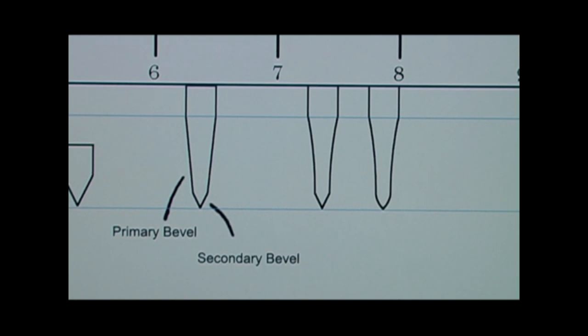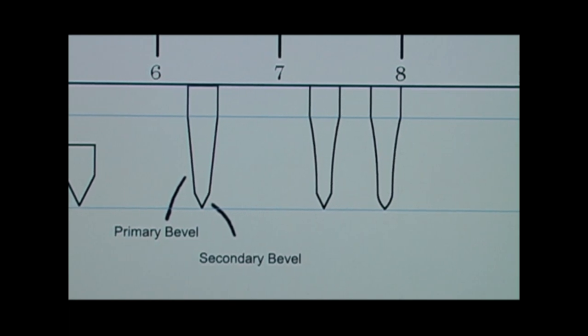Or you could do it on a slack belt, or sandpaper taped over a mouse pad, something like that. That's going to give you this slightly convex, a little bit rounded edge. It's not a precise angle, precise bevel, but it's still coming in at a stronger angle than your primary bevel is.